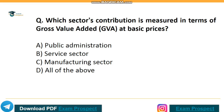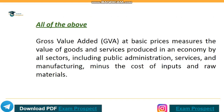Which sector's contribution is measured in terms of Gross Value Added (GVA) at basic price? Correct answer: option D, all of the above. Gross Value Added (GVA) at basic price measures the value of goods and services produced in an economy by all sectors, including public administration, services, and manufacturing, minus the cost of inputs and raw materials.